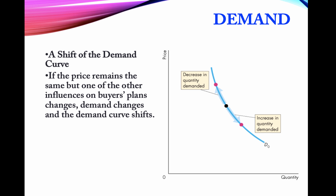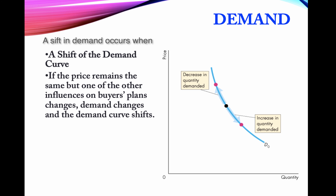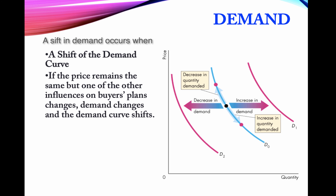If there is a change in any of the factors we assumed were constant when we drew the demand function, there will be a shift in the demand function. Demand either increases — meaning the whole function shifts to the right — or it decreases, meaning it shifts to the left.